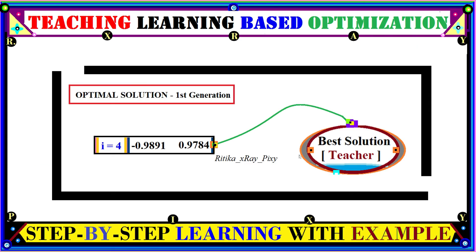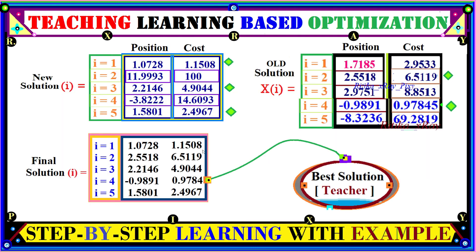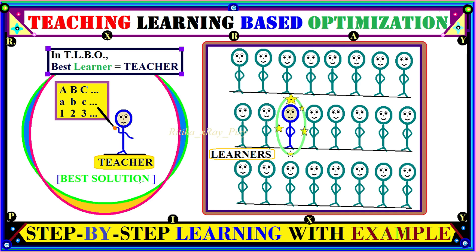The first iteration is now complete and the optimum value obtained is shown. This teacher value will be used in the next iteration. In the second iteration, we have the population size, cost values, and teacher value. We start from the main loop — the best learner among all is considered as the teacher. That's all about this video. If you have any questions, you can comment below. Thanks for watching.